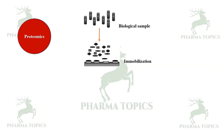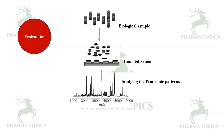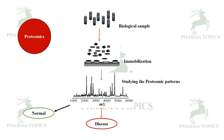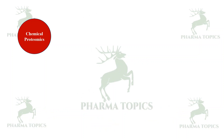In the proteomics workflow, the biological sample is prepared and then immobilized in array technology. The pattern is studied using LC-MS or protein microarray. The different proteins identified may be related to normal proteins, to a disease, or may be entirely new — these new proteins are called new biomarkers. This is very useful in target validation and target discovery, allowing exploration of new markers and development of drugs that reduce these proteins.